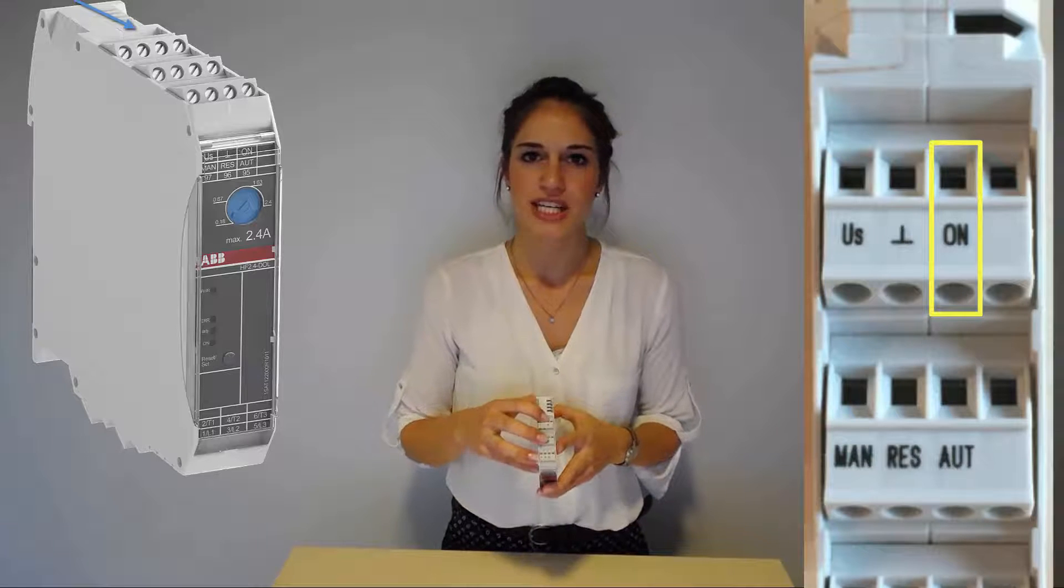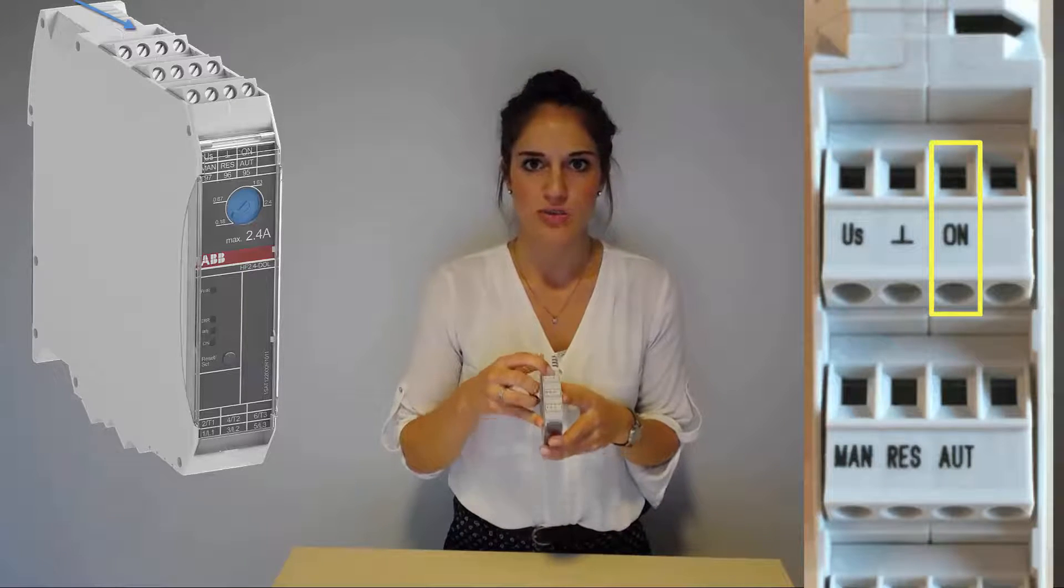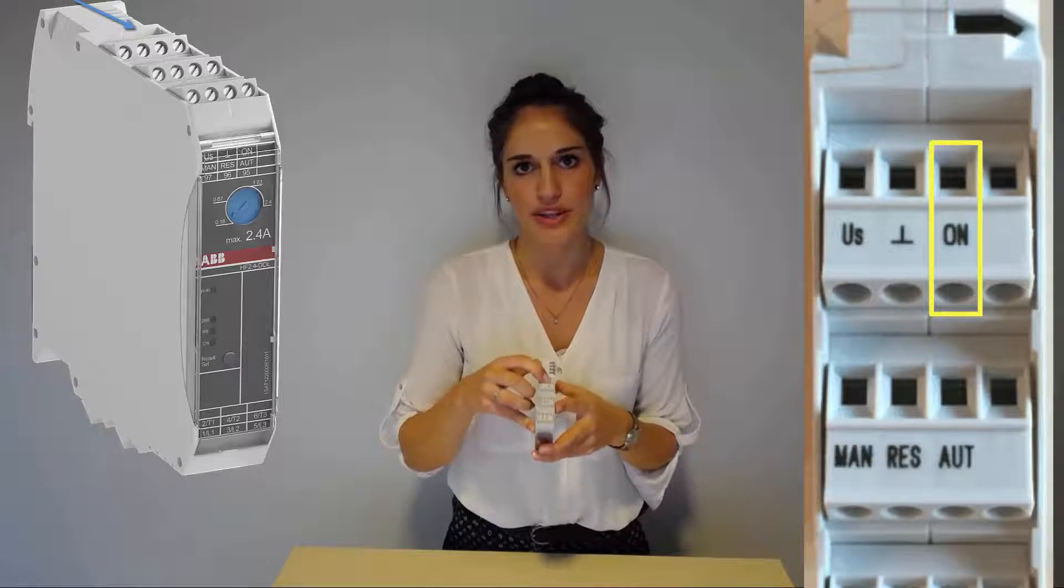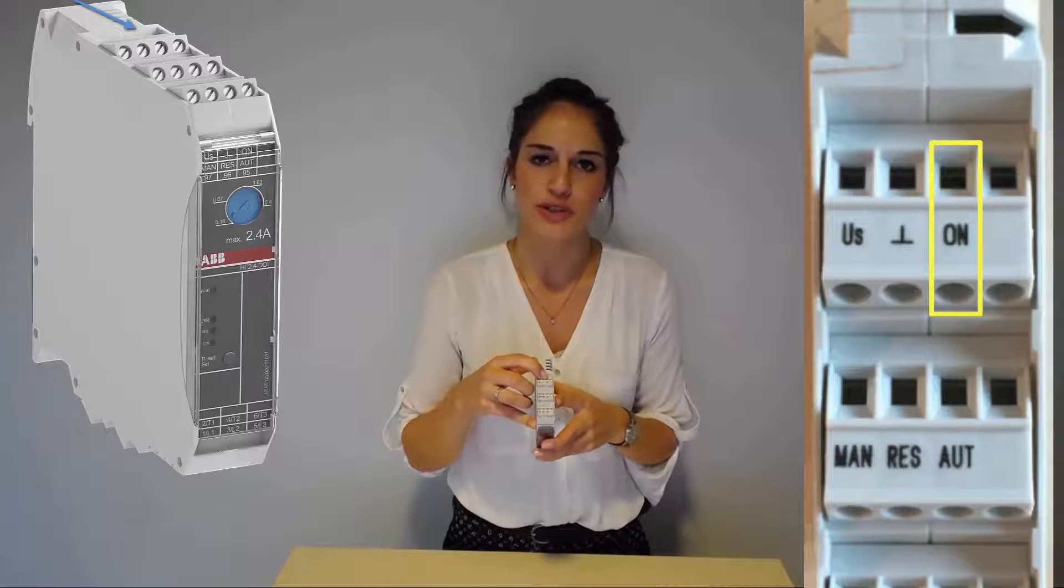Depending on the HF range type, there is one or two control input terminals. For direct online starters, there is one control input terminal labeled with ON. It has to be connected with a switch and a 24V DC power supply that we just connected.